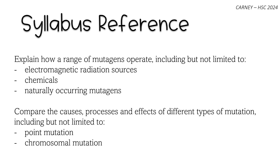Our syllabus reference for this video will look at a range of mutagens, such as electromagnetic radiation sources, chemicals and naturally occurring mutagens, and compare the causes, processes and effects of different types of mutations.